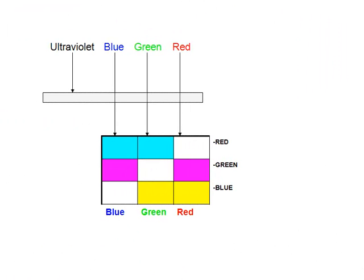This is a cartoon of how color photography works with color film. Basically, a blue object reflecting highly in the blue has a minus-red emulsion, minus-green emulsion, and minus-blue emulsion. A blue object becomes blue on color film, a green object becomes green, and a red object becomes red on color film.